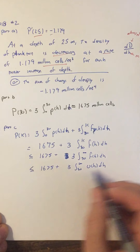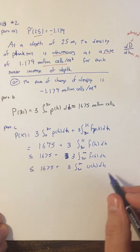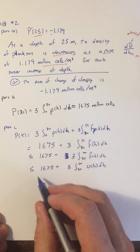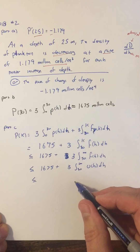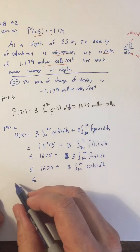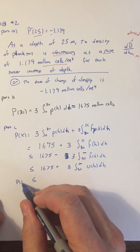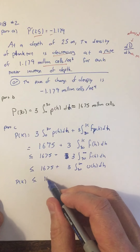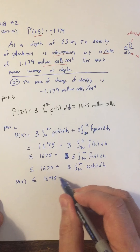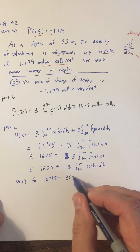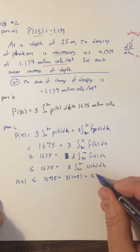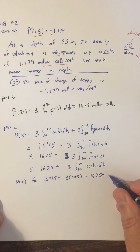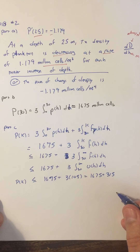We know the integral from 30 to infinity of u of h is 105. So p of k is less than or equal to 1675 plus 3 times 105, which equals 1675 plus 315, which equals 1990.